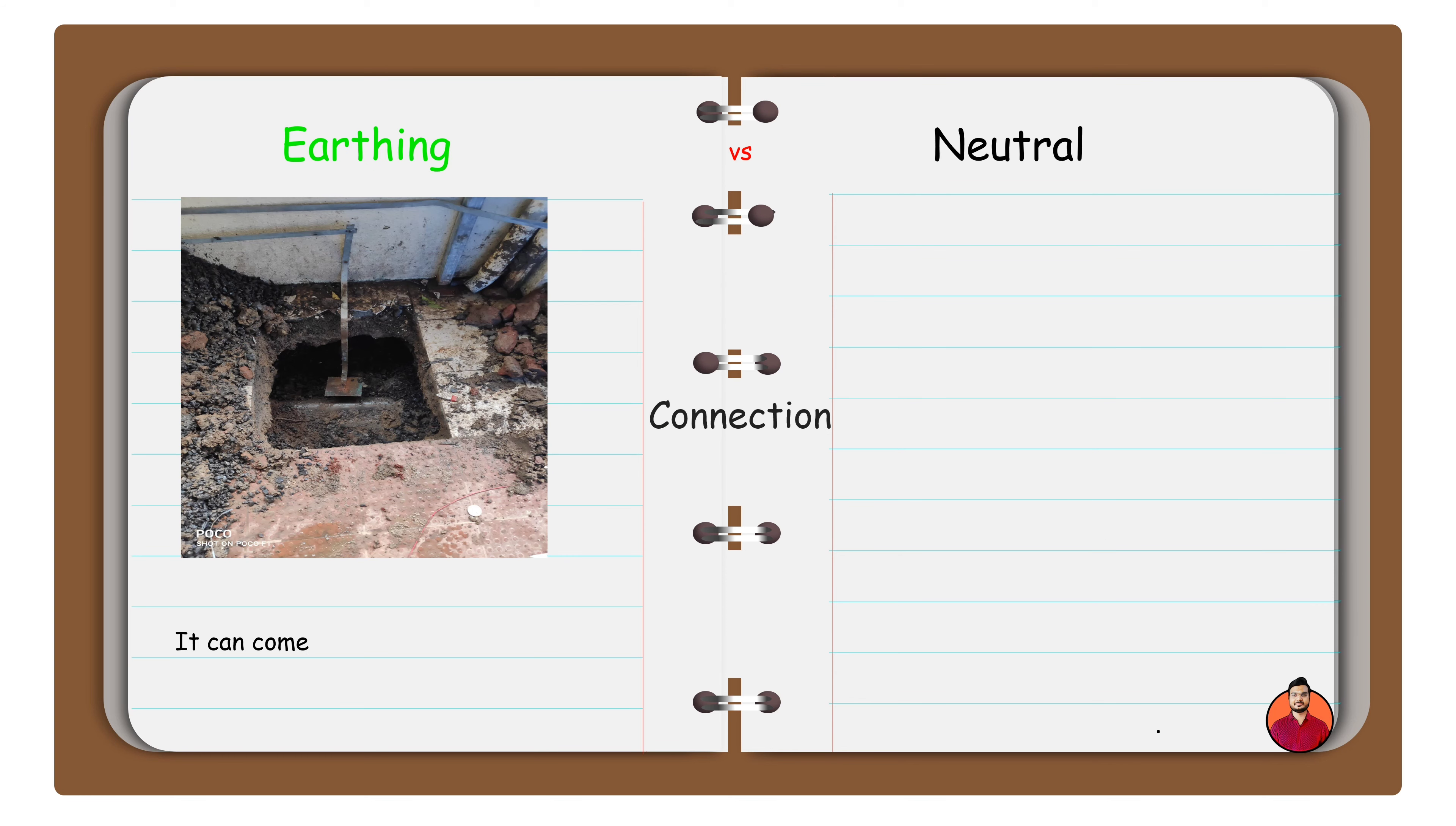Earth can come from a neutral line or can be separately executed. Neutral comes from a neutral line.